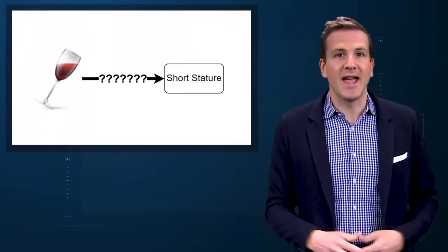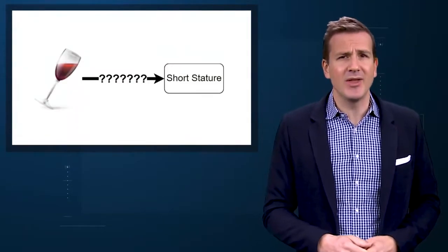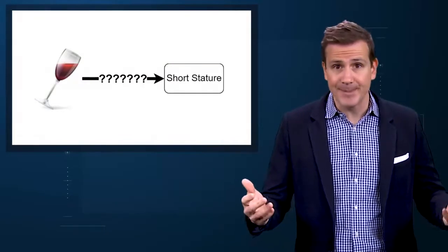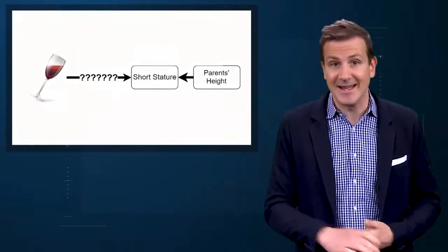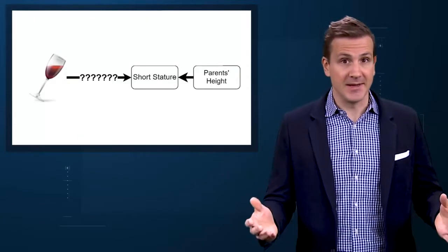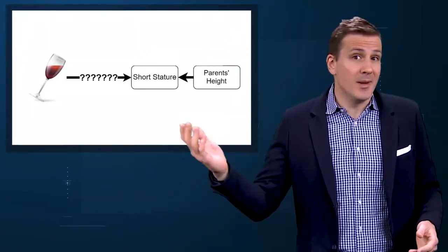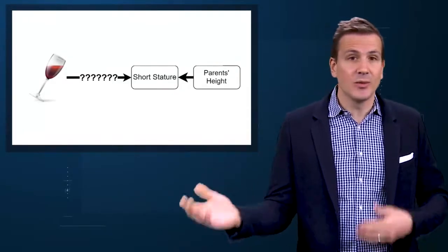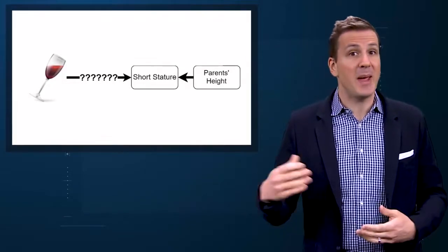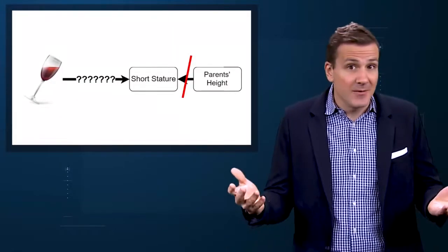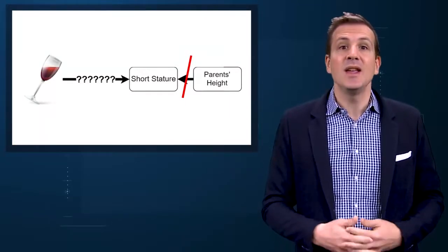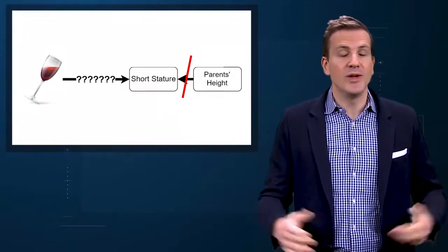Now let's reset and ask about a variable that is only associated with the outcome, but not the exposure – say, parental height. Not a confounder. Practically speaking, you don't need to worry about it. Testing the rosé-height hypothesis does not require measurement of parent's height. Adjusting for parent's height gets you no closer to the causality question than you were when you started.